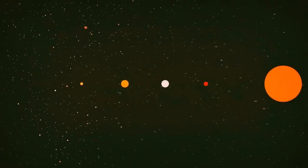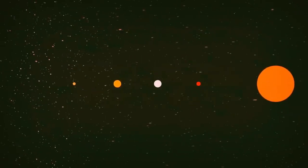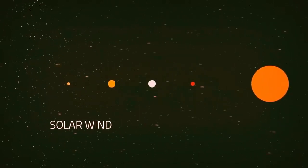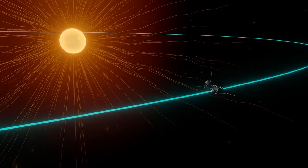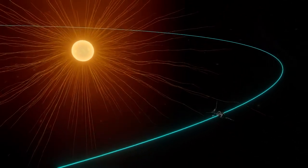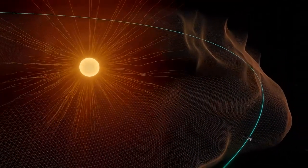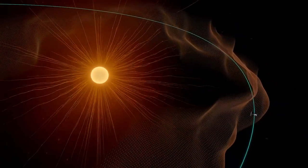Eventually, some of this hot and fast solar material escapes the pull of the sun and gushes out into space as solar wind. The boundary that marks the edge of the sun's atmosphere is known as the Alfvén critical surface. We didn't know exactly where this boundary was,